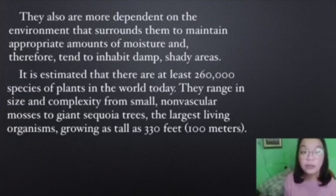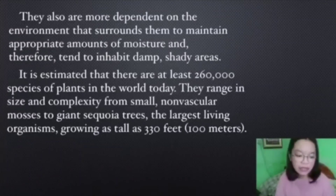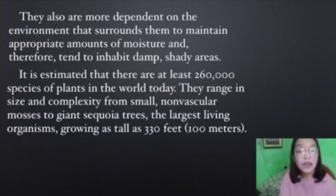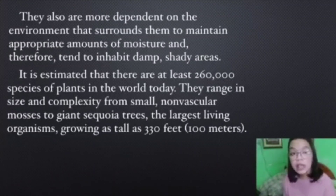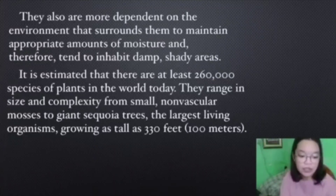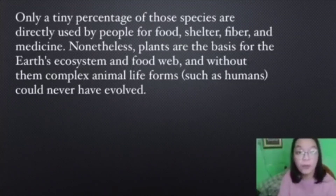An example of a non-vascular plant commonly seen in our environment is moss, or lumot. Did you know that it is estimated that there are at least 260,000 species of plants in the world today? They range in size and complexity from small non-vascular mosses to giant sequoia trees, the largest living organism, growing as tall as 330 feet or 110 meters. Only a tiny percentage of those species are directly used by people for food, shelter, fiber, or medicine.